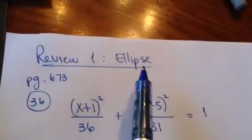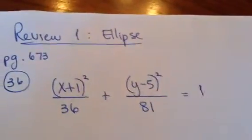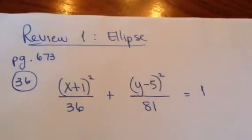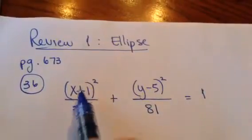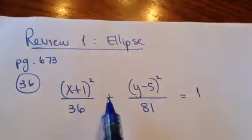Okay, let's review the ellipse. This would be something very typical of what you would see on your test. And by the way, you know it's an ellipse because both the x and the y are squared and you are adding.